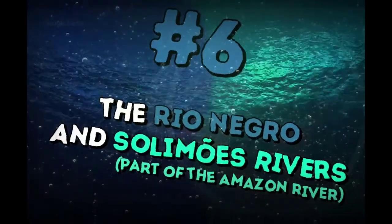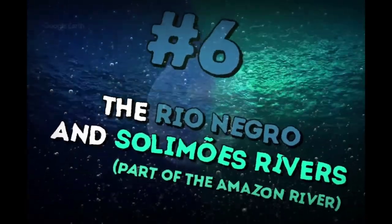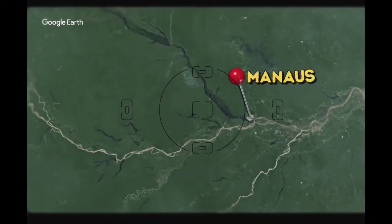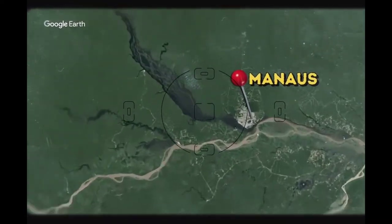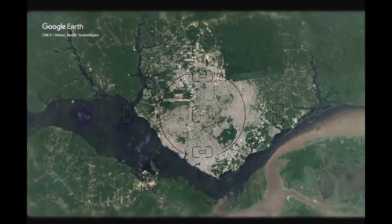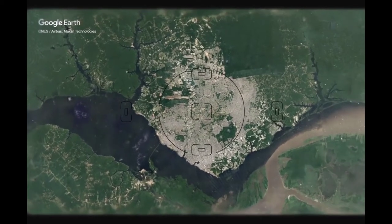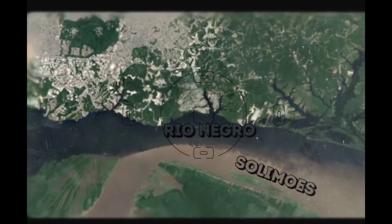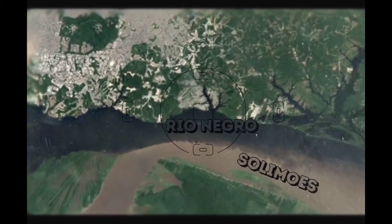The Rio Negro and Solimões rivers, part of the Amazon River. Six miles from Manaus, in Brazil, Rio Negro and Solimões rivers run into each other but don't mix for about 2.5 miles. The Rio Negro is dark and Solimões light. They have a different temperature and speed of flow.